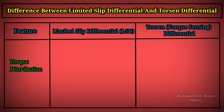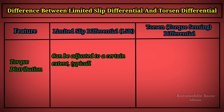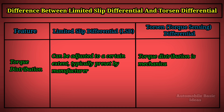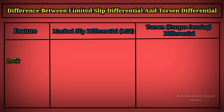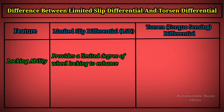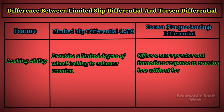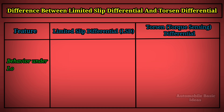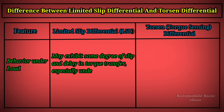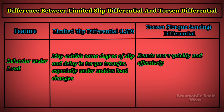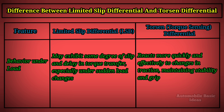Torque distribution on an LSD can be adjusted to a certain extent, typically preset by the manufacturer, and may exhibit some slip and delay in torque transfer, especially under sudden load changes. The torsen differential's torque distribution is mechanical and reacts dynamically to wheel slippage, offering a more precise and immediate response to traction loss without locking up, reacting more quickly and effectively to changes in traction to maintain stability and grip.